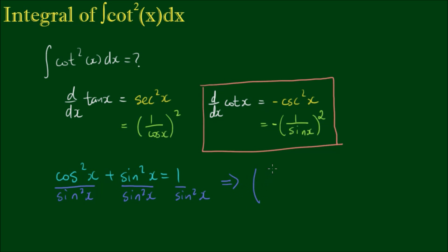We can write the first term as cos x over sin x all squared plus sin squared x and sin squared x cancel to give 1 equals 1 over sin x all squared.